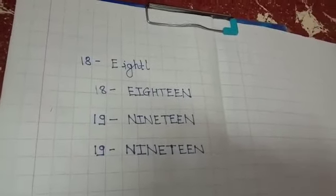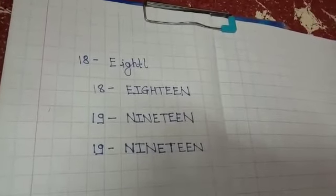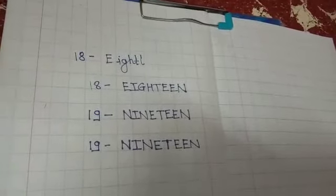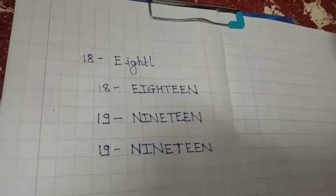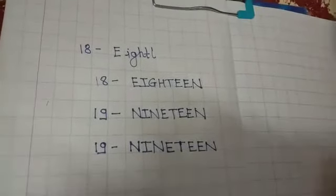Students, in your notebook you can write down the spelling of 19 ten times. Then we recognize the spellings of 1 to 18.